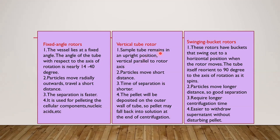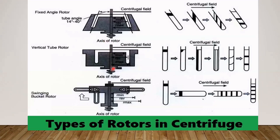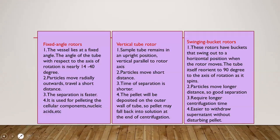The vertical tube rotor holds the sample in an upright position, that is vertical and parallel to the rotor axis. Here the particles move a short distance, so the time of separation is shorter. However, a drawback is that the pellet will be deposited on the outer part of the tube and may fall back into the solution at the end of centrifugation.